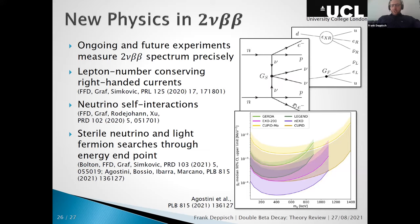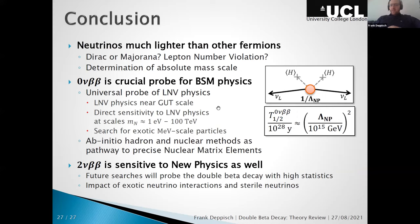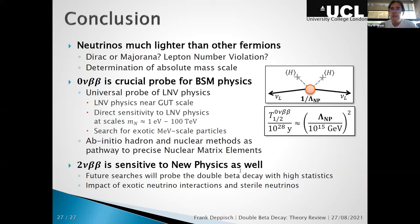New physics searches in the two-neutrino spectrum include: right-handed currents, neutrino self-interactions, and sterile neutrinos emitted as part of two-neutrino double beta decay — where from the endpoint one can infer the sterile neutrino mass. The sensitivity is not very high but can in some cases improve upon single beta decay searches in this mass region. Thank you very much for your patience.